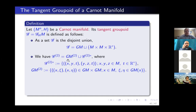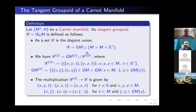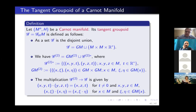The tangent groupoid of a Carnot manifold is defined similarly to the Riemannian case, except we replace the tangent space by the tangent group bundle. As a set, it is again a disjoint union of the tangent group bundle GM and M × M × R*. The domain G2 is defined similarly: on M × M × R* you have the same G2*, and for the GM part, tangent elements in the same fiber. The multiplication on the R* part is the same as before — the pair groupoid multiplication. On GM, the product of (X, ξ) and (X, η) is the fiber product in the tangent group GX. To define the topology and differentiable structure, we cannot use just any chart — we need an H-chart, which is a local chart together with an H-frame.